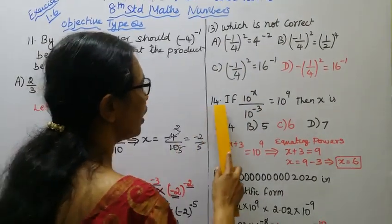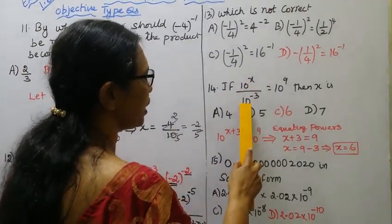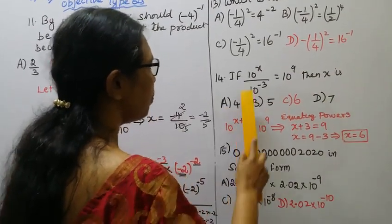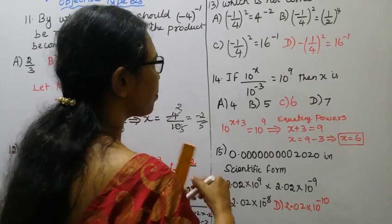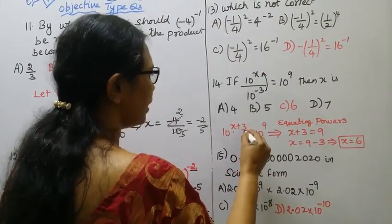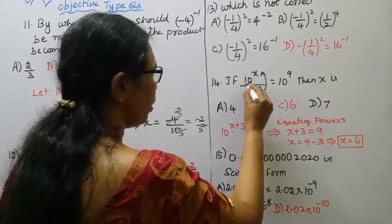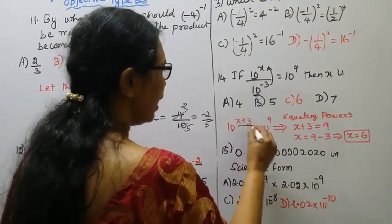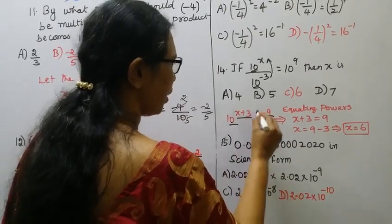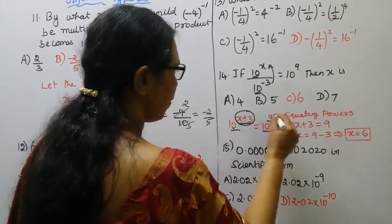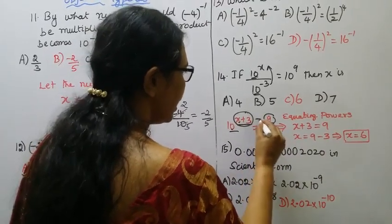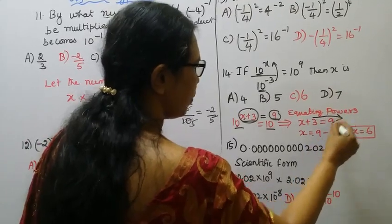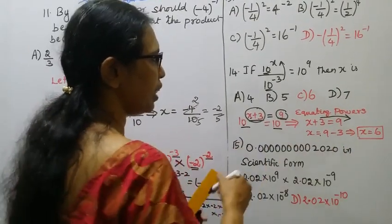14th sum: If 10 power x by 10 power minus 3 equals 10 power 9, then x is what? 10 power x minus (minus 3), so 10 power x plus 3 equals 10 power 9. Base is equal, so x plus 3 equals 9, therefore x equals 6. Option C.